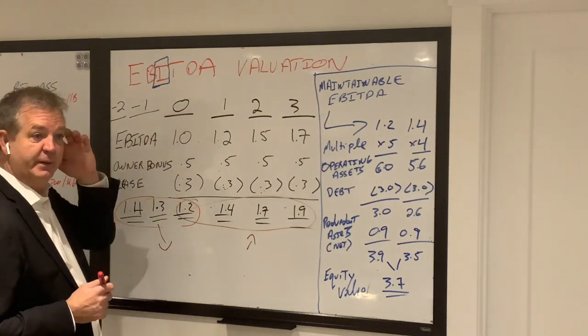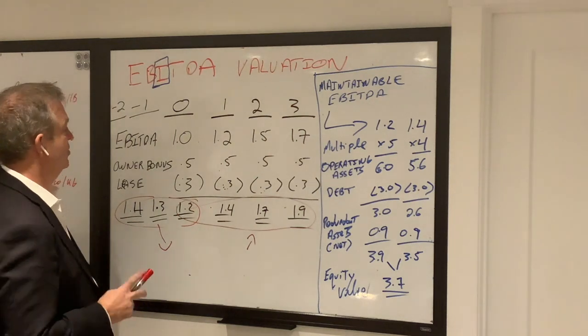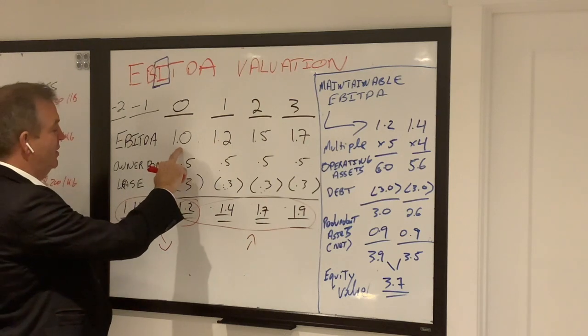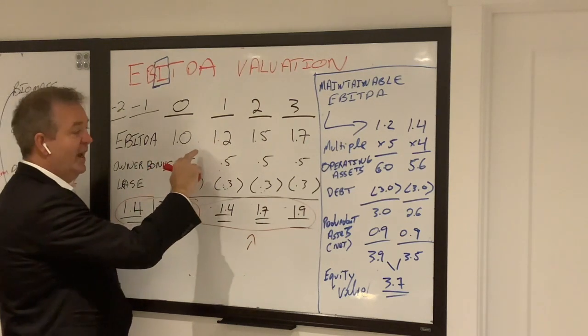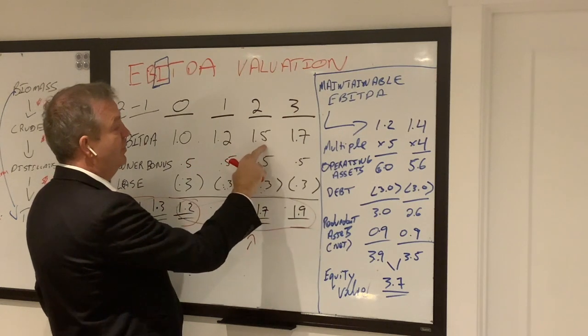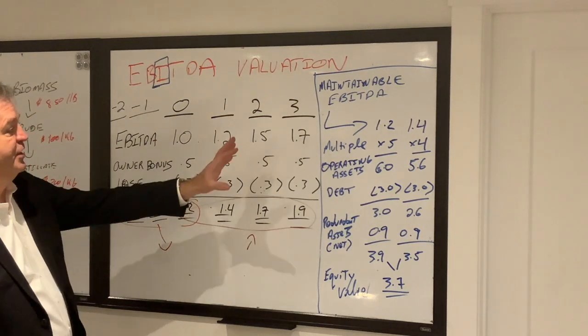Year zero means today. We've just completed a year end, we know for a fact these numbers are actual. Our EBITDA from our financial statements is $1 million. We have projections into the future of 1.2 of EBITDA, 1.5 of EBITDA, and 1.7 of EBITDA. So there's some growth that we're projecting out.